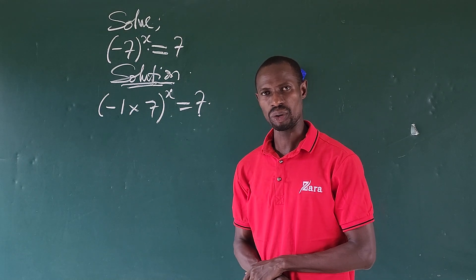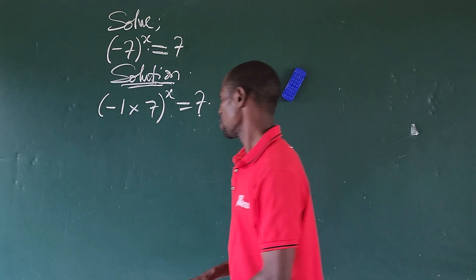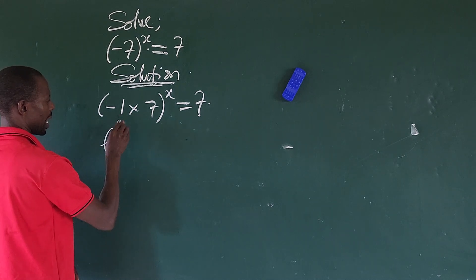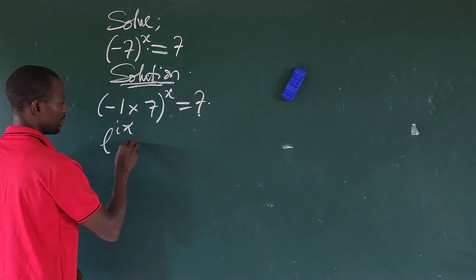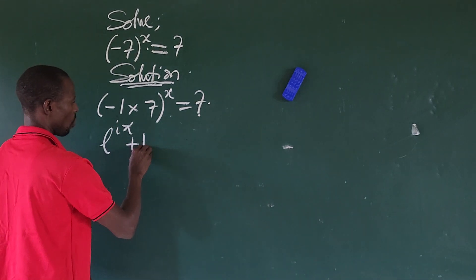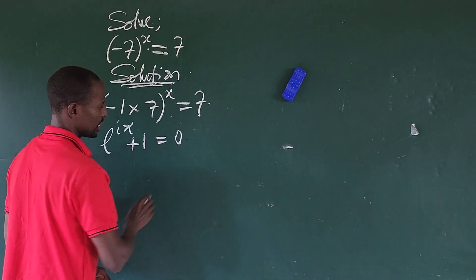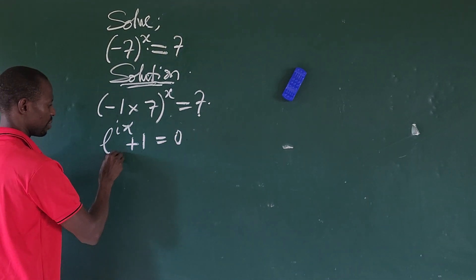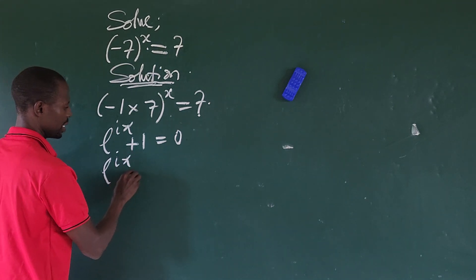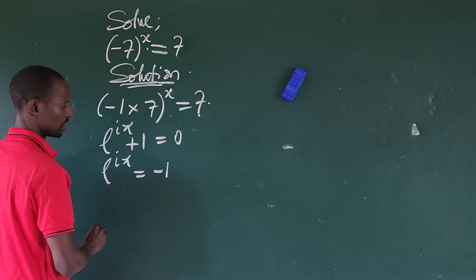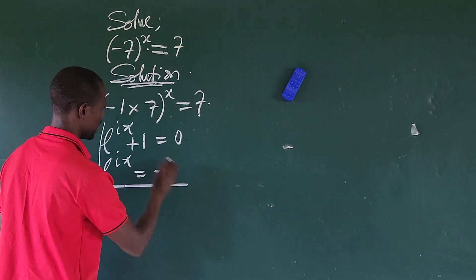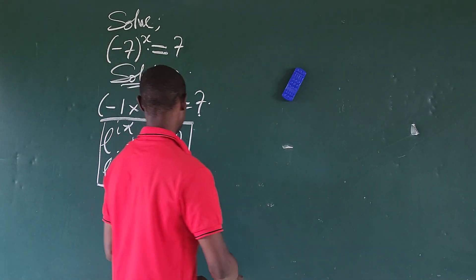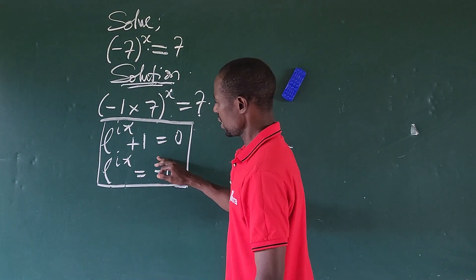Now we are going to recall what we call Euler's identity. It states that e to the power of iπ plus one equals zero. We can rearrange this to give us e to the power of iπ equal to minus one. So with what we have here, look carefully — we are having minus one, which we can now represent using the left-hand side of Euler's identity.